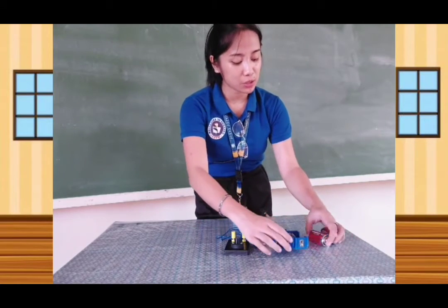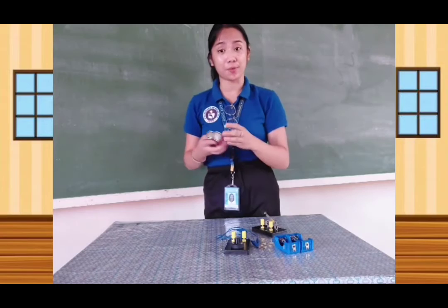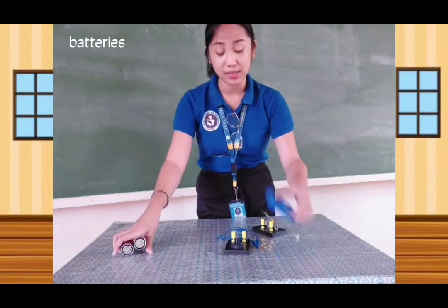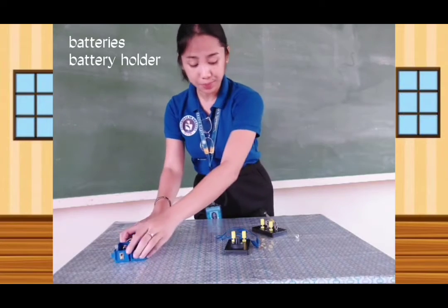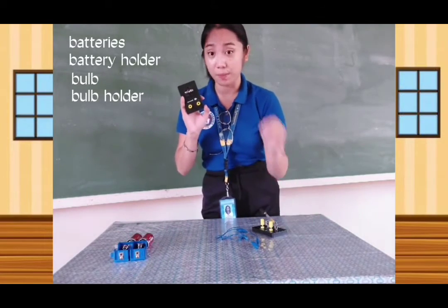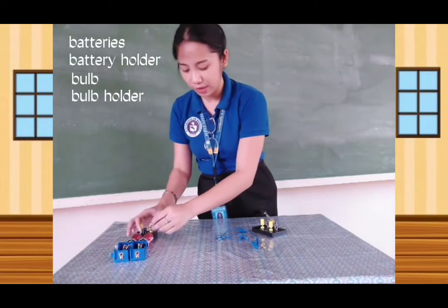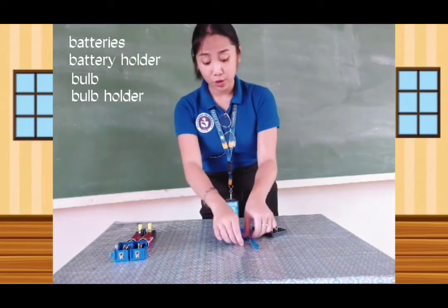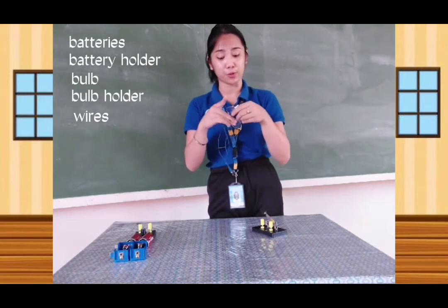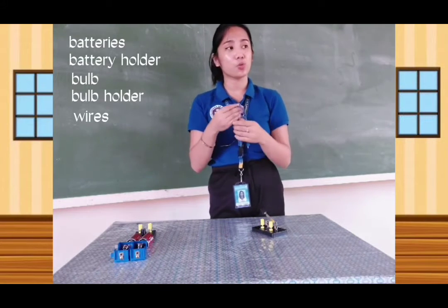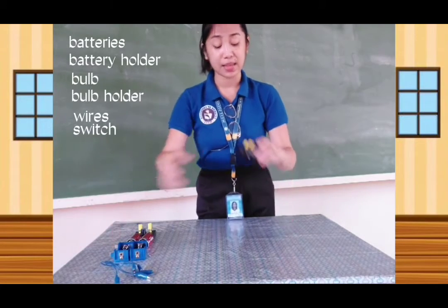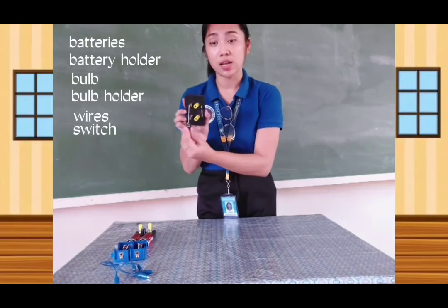The first things you will see there are your batteries. Every group should have their batteries, their battery holder, their light bulb holder, and of course the bulb — so you have to be very careful with that. Your wires: there should be three pairs of wires for every group. Next, you have your switch.